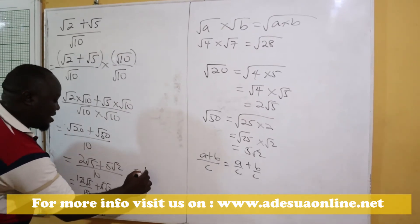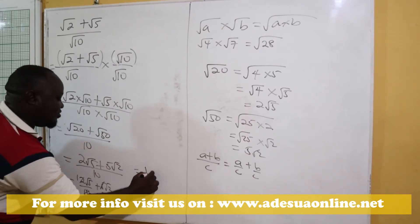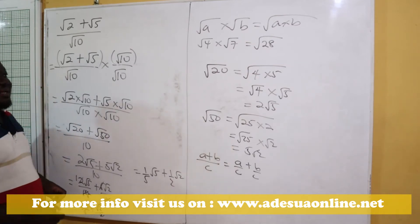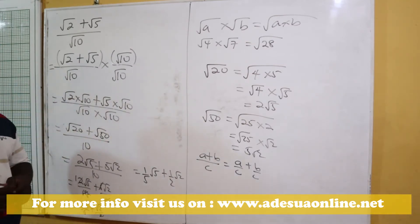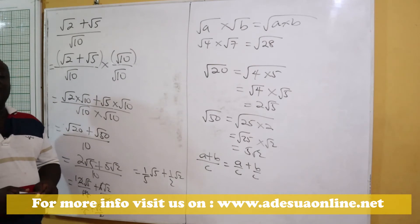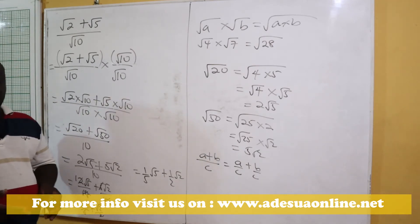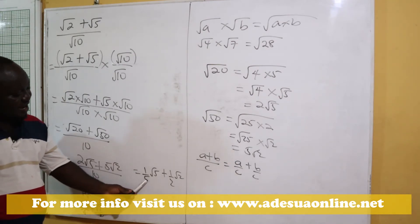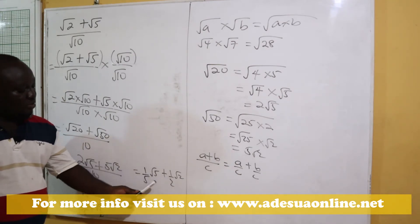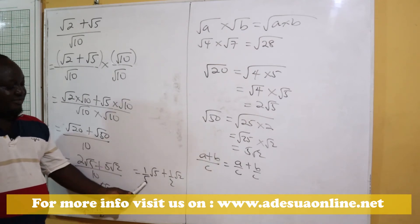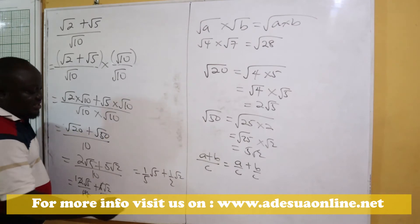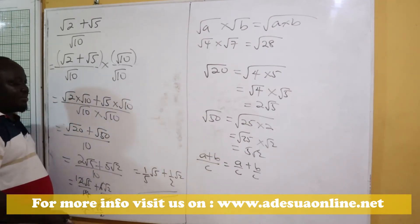The answer can also be written as 1 over 5 times root 5 plus 1 over 2 times root 2. The question asked us to write it in the form a root 5 plus b root 2. We can see that this matches that form, where a equals 1 over 5 and b equals 1 over 2. That is the solution to Question 1.